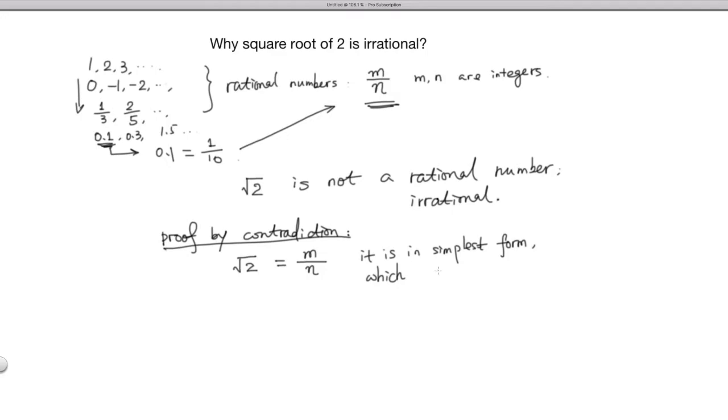Which means m and n does not have a common factor, right? If they have a common factor, it is not a simplest form. So which means that the GCD, greatest common factor of m and n, is 1.